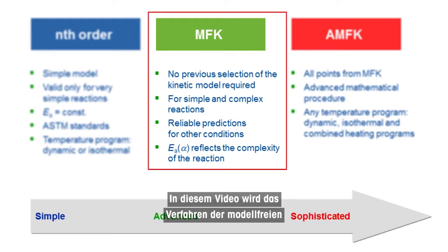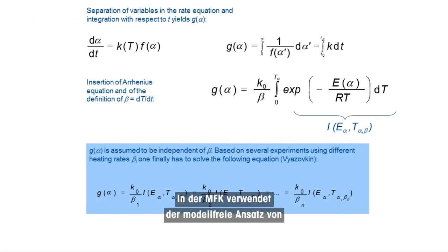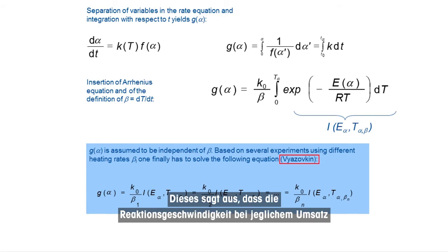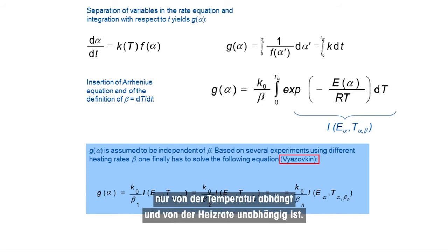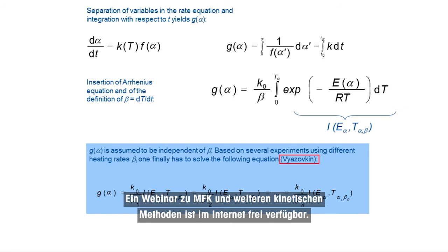This video describes the procedure of Model Free Kinetics, or MFK for short. MFK calculates the conversion-dependent apparent activation energy to make reliable predictions about reaction behavior. In MFK, the Model Free Approach of Weisovkin uses the so-called isoconversion principle. This states that at any particular conversion, the reaction rate depends only on the temperature and is independent of the heating rate. A webinar dedicated to MFK and other kinetic methods is freely available on the Internet.